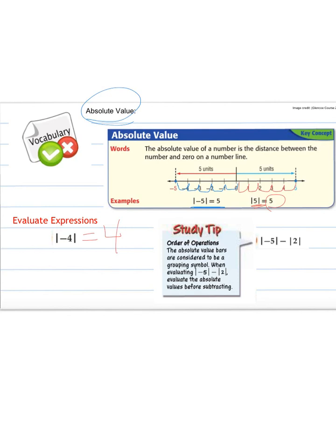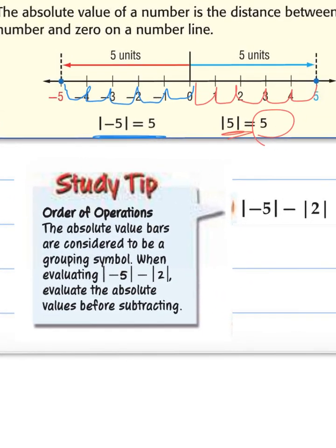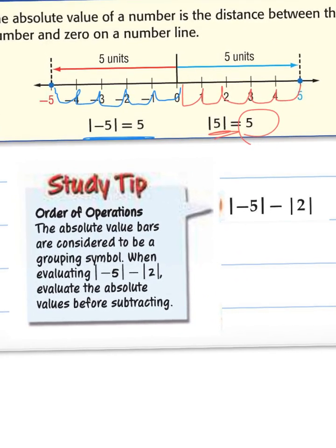Something here to note: order of operations. The absolute value bars are considered to be a grouping symbol, which goes along with like our parentheses. When evaluating the absolute value of negative 5 minus the absolute value of 2, evaluate the absolute values before subtracting. So let's try this one.